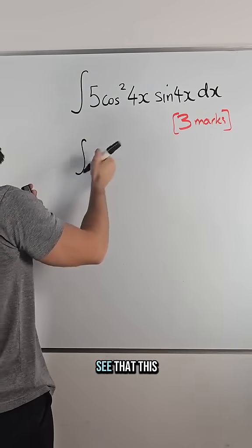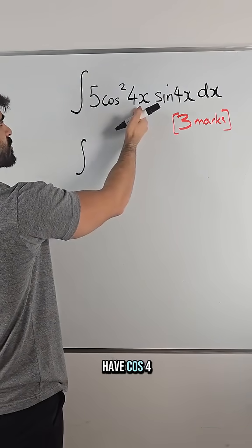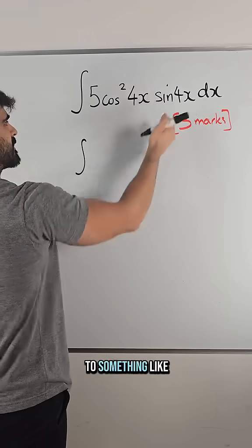we can immediately see that this is a power function. We have something squared, and here I have cos4x, which differentiates to something like this.